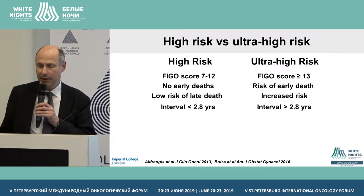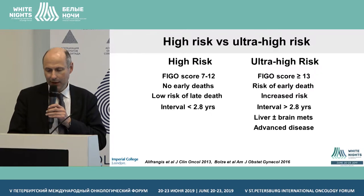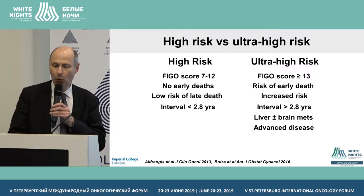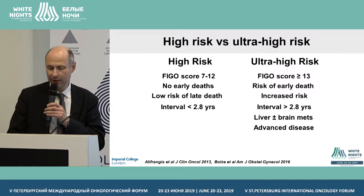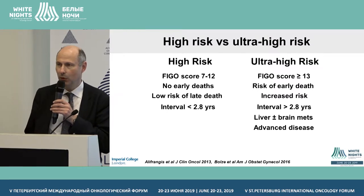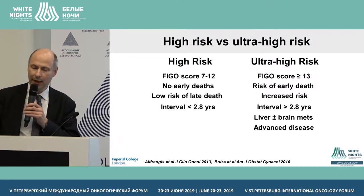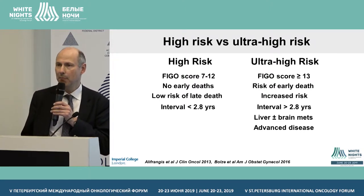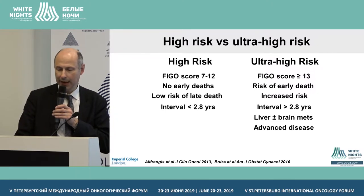What might be associated with ultra-high-risk other than the FIGO score? An interval of more than 2.8 years is associated with ultra-high-risk disease. The presence of liver metastases either alone or in combination with brain metastases is a particularly poor-risk feature. The Chinese have produced data suggesting renal metastases may also be a poor-risk factor. Any patient presenting with very advanced disease - lungs largely replaced with tumour and in respiratory failure - should be regarded as ultra-high-risk. These patients are dying of bleeding and metabolic problems such as metabolic acidosis when you start treating the tumour.